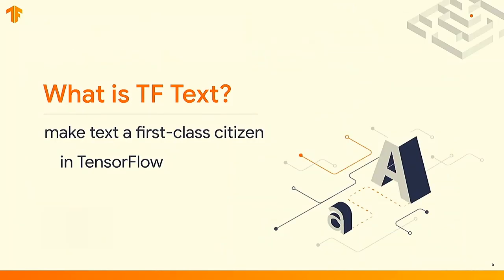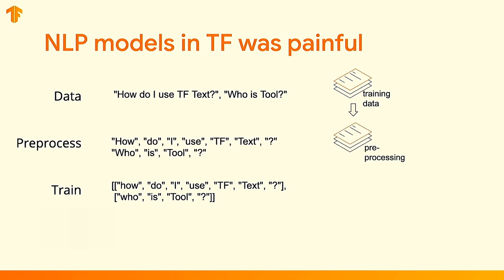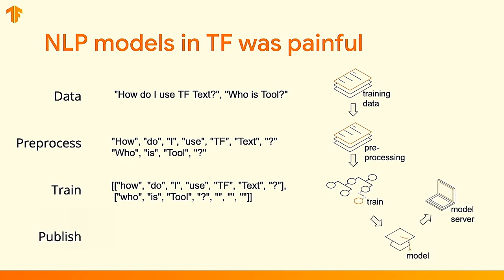So let's jump right in. What is TFText? Our charter was basically to make programming these language models in TensorFlow easier. Traditionally, it's been very difficult. You would get some data — like here's an example of queries — and before we can train on this data, we need to do some preprocessing, which is basically tokenization outside of TensorFlow, because we didn't have that availability inside it. Once we did this preprocessing, we had to somehow fit it into a tensor, pad out our tensors to make them a uniform shape, and then finally train our model and publish it to a model server.